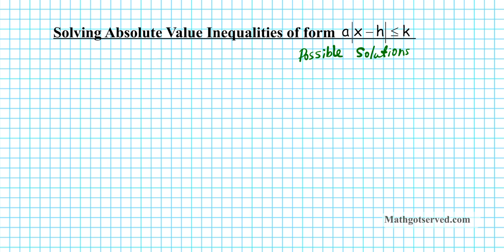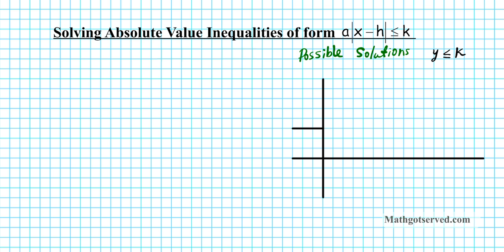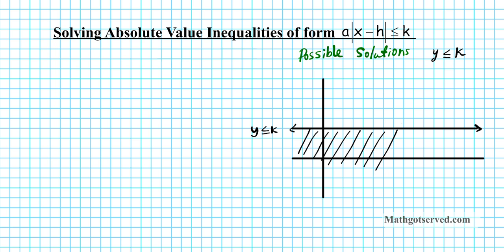Let's start with the graph y is less than or equal to k. This is a situation where you have a horizontal line and the solution region is all the points that are below that horizontal line. Let's draw our coordinate system with a y-axis and an x-axis. Let's say we have that line y equals k somewhere here. So y is less than or equal to k is basically this entire region underneath this line — this half plane right here. Any region underneath this line, if this value is k, will satisfy this inequality.